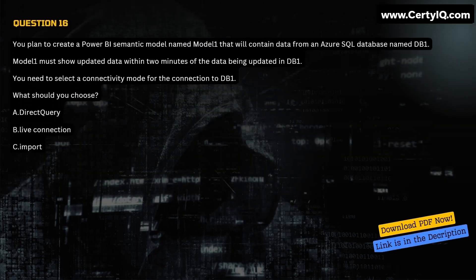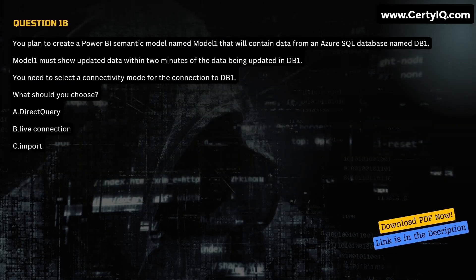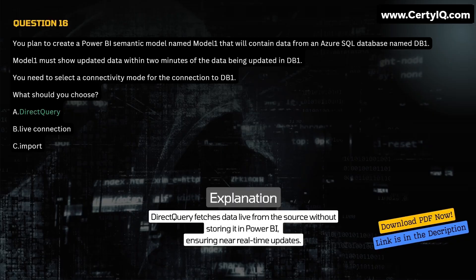Question 16. You plan to create a Power BI semantic model named Model1 that will contain data from an Azure SQL database named DB1. Model1 must show updated data within two minutes of the data being updated in DB1. You need to select a connectivity mode for the connection to DB1. What should you choose? A. Direct Query. B. Live Connection. C. Import. Correct answer is A. Explanation: Direct Query fetches data live from the source without storing it in Power BI, ensuring near real-time updates.